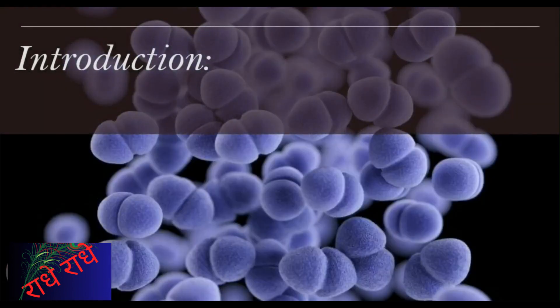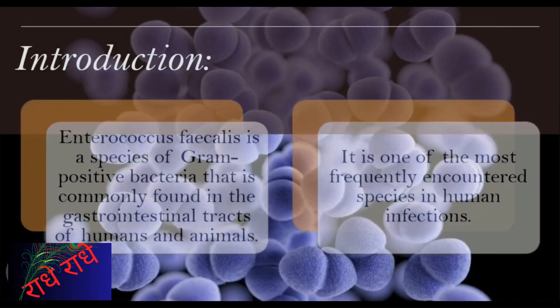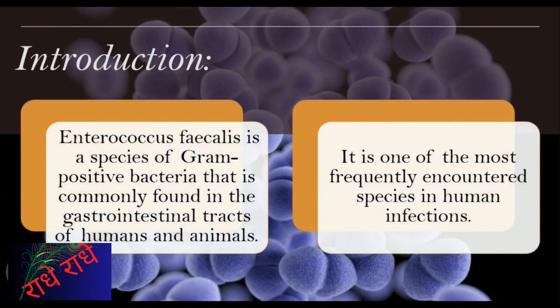Enterococcus faecalis is a species of gram-positive bacteria that is frequently found in the gastrointestinal tract of humans and animals. It is one of the leading causes of human infections and can survive extreme environments, making it difficult to treat. It is a facultative anaerobic, capable of adapting to both aerobic and anaerobic conditions, and can be found in soil, water, and food.